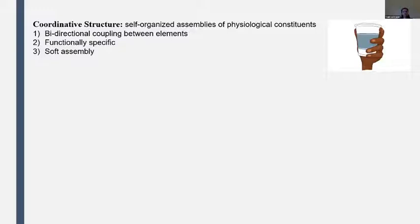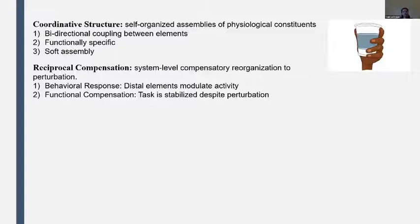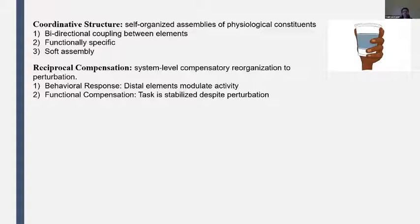Coordinative structures exhibit an interesting phenomenon known as reciprocal compensation, where if you perturb the system, you'll observe systematic system-level reorganization that compensates for that perturbation, manifesting typically with a behavioral response that facilitates the functional compensation. Consider if I'm grasping the cup — if my thumb is perturbed such that it's not able to produce the appropriate amount of force to keep the cup from falling, there will be compensations in the other fingers that increase their force production to stabilize the task. The behavioral response is the increase in force production and the functional compensation is that the cup is maintained.